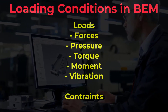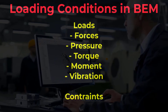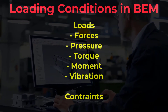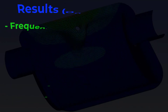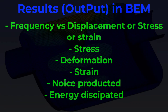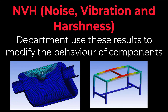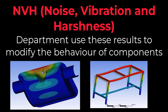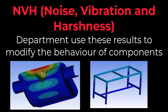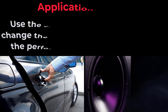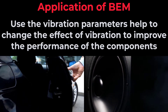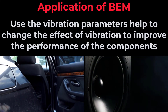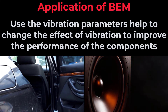In the Boundary Element Method, we apply loads such as forces, pressure, torque, moment, and vibrations, and we also provide constraints on the model. In BEM, we attain results like displacement, stress, or strain versus frequency, noise produced, and energy dissipated. Once these results are obtained, CAE engineers — especially those working in the NVH (Noise, Vibration, and Harshness) Department — attempt to modify the component based on its functioning. For some components like car doors, we aim to minimize the effects of noise and vibration, while in components like speakers, we attempt to amplify these effects.